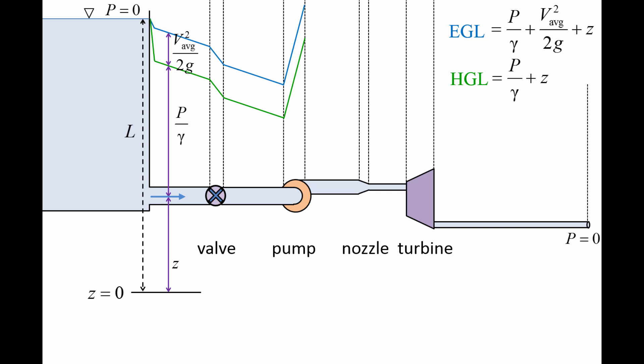After the pump, fluid travels through a pipe and then a nozzle. Nozzles accelerate flows while lowering pressure, usually without inducing significant flow separation. This means that the EGL curve declines gradually through the pipe and nozzle.